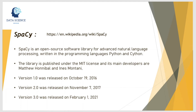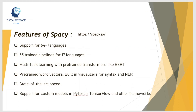Now let's talk about spaCy. spaCy is an open source software library for advanced natural language processing, written in Python and Cython — Cython being a superset of Python. Its main developers are Matthew and Anis. Our focus will be more on spaCy because it is more recently developed: version 1 was released October 19, 2016; version 2 on November 7, 2017; and version 3 on February 1 recently. It was built with industrial use in mind and has features like support for 64+ languages, 55 trained pipelines for 17 languages, multitask learning with pre-trained transformers like BERT, pre-trained word2vec, state-of-the-art speed, and support for custom models in PyTorch, TensorFlow, or other frameworks.